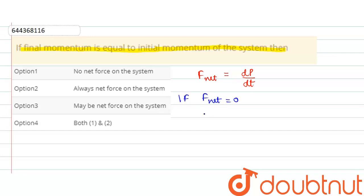then we can say that dp/dt comes out to be equal to zero. If dp/dt is equal to zero, that is change in momentum is equal to zero, hence we can say that